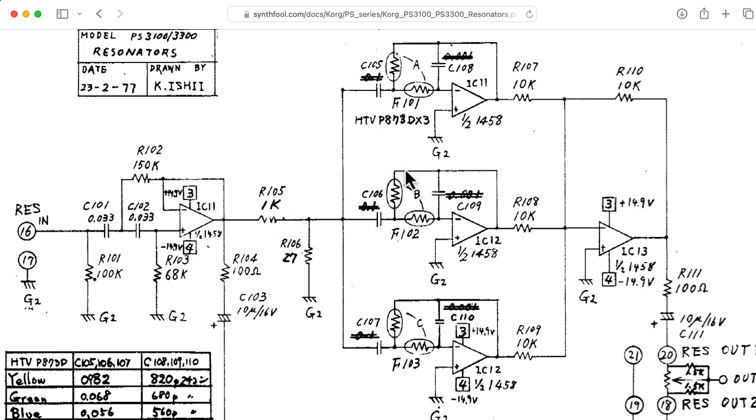And without any real justification other than intuition, I'm going to assume that this 27 ohm is so small relative to the input impedance seen looking into the various filters that we can treat this separately.